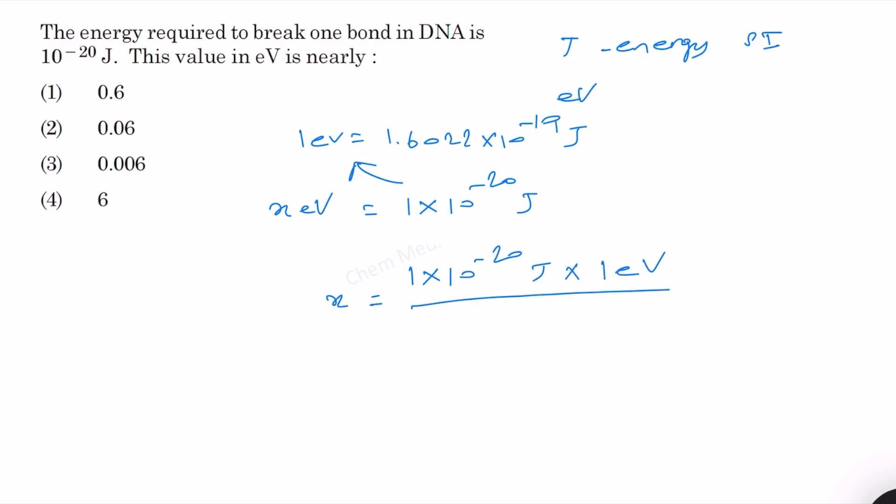1 times 10 to the power minus 20 joules times 1 eV divided by 1.6022 times 10 to the power minus 19 joules.